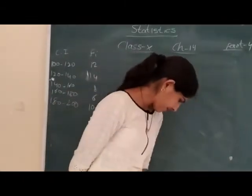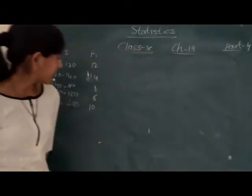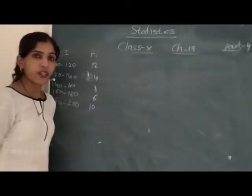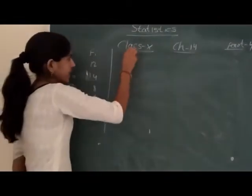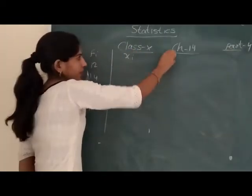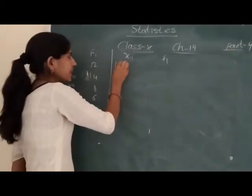Okay? This is the frequency distribution. Therefore, when we have made XI, we make less than.